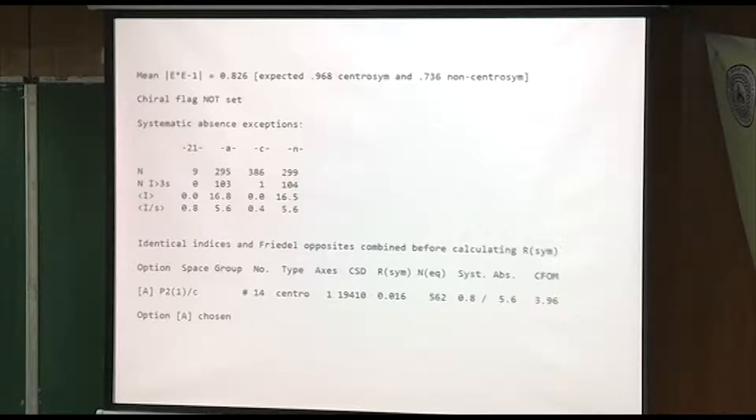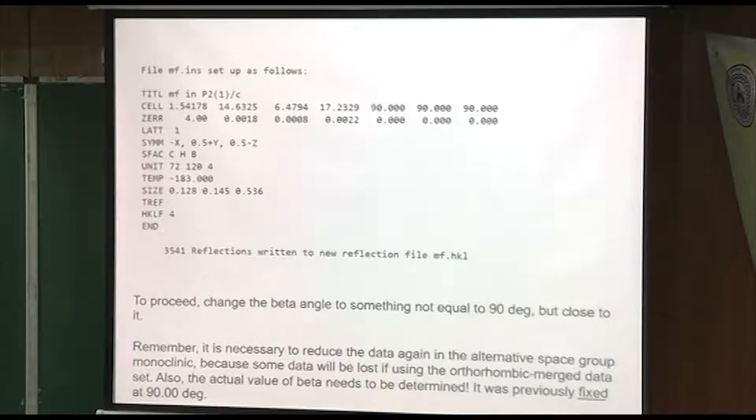It sets up this file. The main thing I wanted you to notice here is that this is now copper radiation. The wavelength is 1.54178 angstroms, about double what molybdenum wavelength is. Here's the symmetry operation, SFAC just carbon, hydrogen, and boron. I put in the size and then it's set up to do TREF, direct methods.